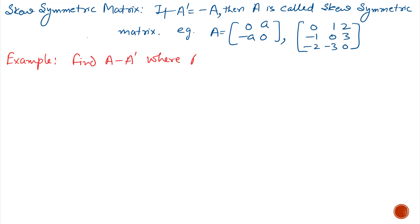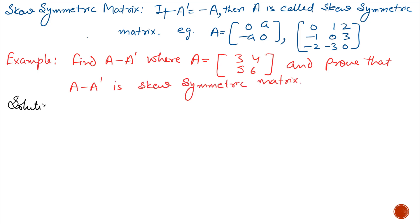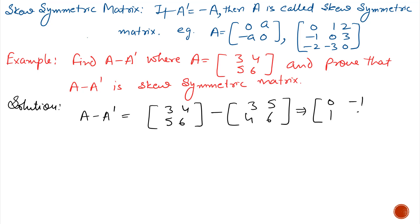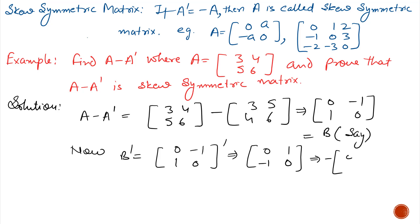Example: Find A minus Aᵀ where A is 3, 4, 5, 6, and prove that A minus Aᵀ is a skew-symmetric matrix. A minus Aᵀ gives 0, −1, 1, 0. Calling this B, we take Bᵀ which equals 0, 1, −1, 0. Factoring out −1 gives −1 times (0, −1, 1, 0), which equals −B. So B, which equals A minus Aᵀ, is a skew-symmetric matrix.